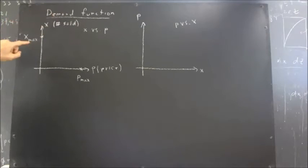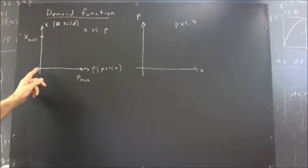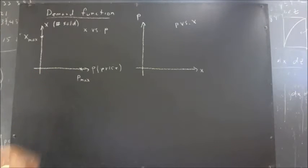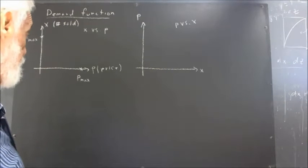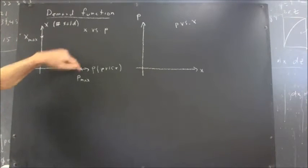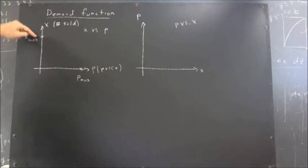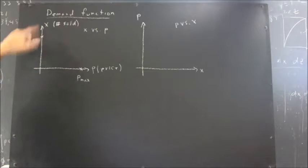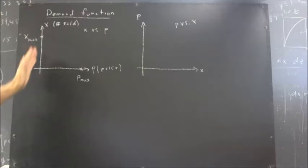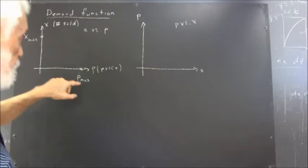X stands for the number sold. Max means maximum — the maximum number I could sell would be 700, and that would occur when the price is zero. The other bit of information we have is that people will pay up to $3 but not more. So this point on the graph represents the $3 price, which corresponds to an X value of zero — meaning I sell none if I put the price at $3.